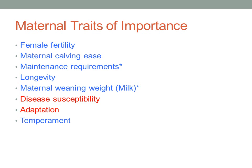For maternal importance, the key traits are female fertility, maternal calving ease — how easily a sire's daughters will give birth — maintenance energy requirements largely driven by mature weight and lactation potential, reproductive longevity, maternal weaning weight driven by milk, disease susceptibility, regional adaptation, and temperament. Again, traits in blue have available EPDs across the majority of breeds, while traits in red currently don't, although there are ongoing research projects focused on those.